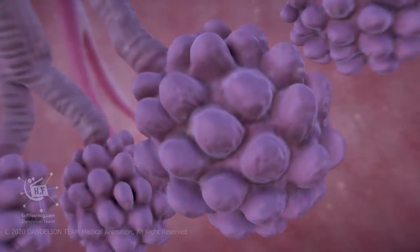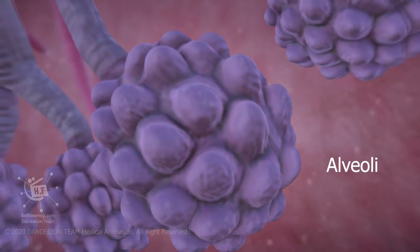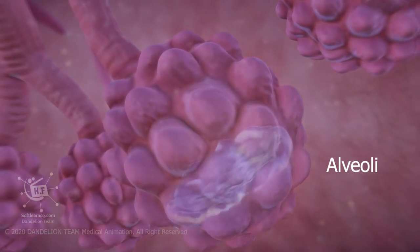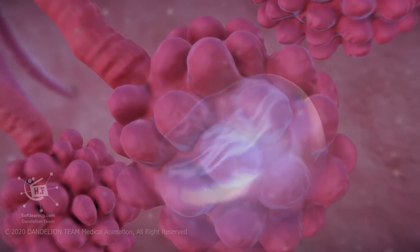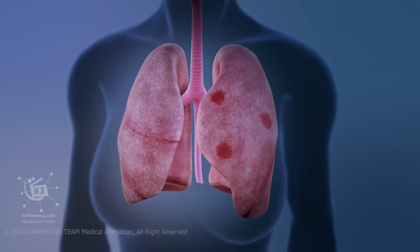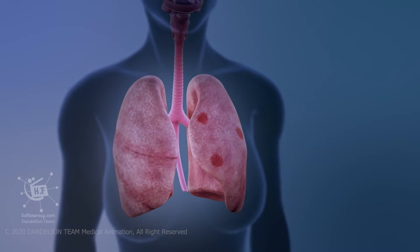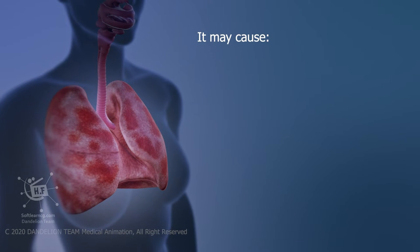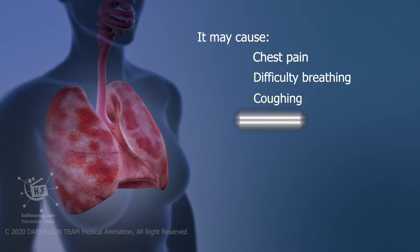Then your bronchioles and alveoli become inflamed. This inflammation can cause your alveoli to fill with fluid, making it difficult for your body to get the oxygen it needs. It could affect one lobe of your lungs, or you could have many areas of both lungs affected. It may cause chest pain, difficulty breathing, coughing, fever and chills, confusion, headache, muscle pain, and fatigue.